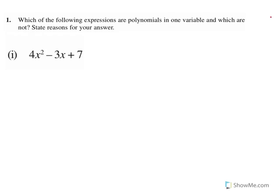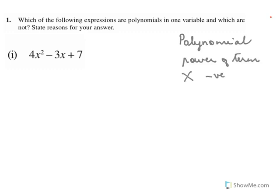Which of the following expressions are polynomials in one variable, and which are not? State reasons. For an expression to be a polynomial, the criteria is that the power of the terms should not be negative and should not be a fraction. We find the power of each term and check if it is negative or a fraction. If the power of any one term is negative or a fraction, it is not a polynomial.